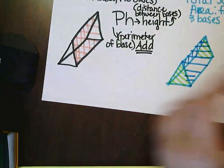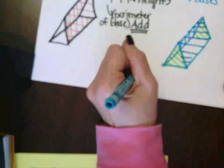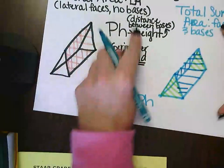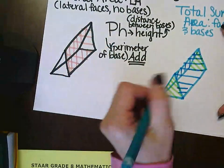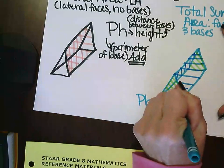The formula that we use for this is PH. We've got that over here, we've already done half of it, right? So PH, and then we're just adding our bases, so two B.